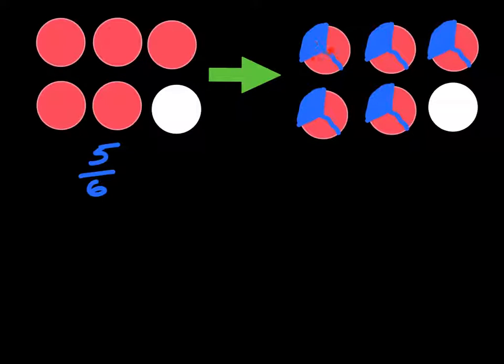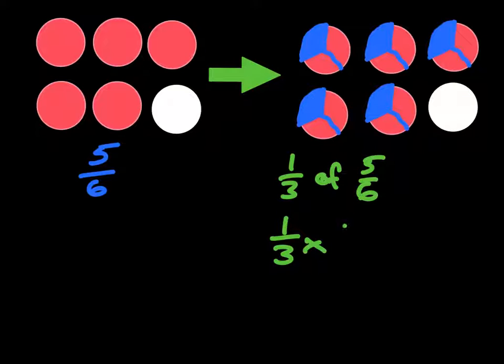When we look at the circles, we can see that each circle is split into thirds. And then what I really have here is I'm taking one-third of those five-sixths. And you can remember from yesterday's lesson that one-third of, of means multiply five-sixths. So really what we're saying is one-third times five-sixths. And then we're able to solve it.